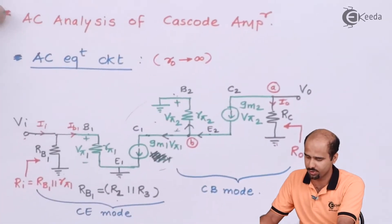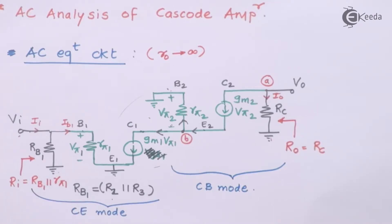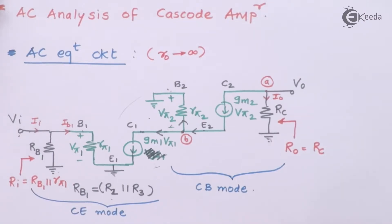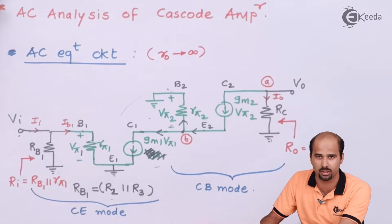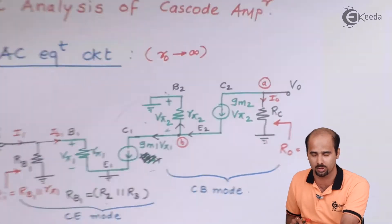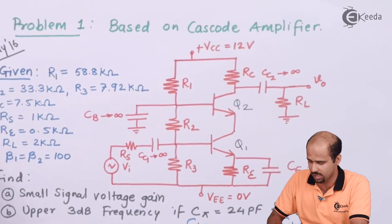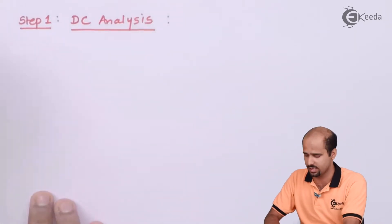First we draw the AC equivalent model of the cascode amplifier to find the voltage gain. But DC analysis is important first — we will calculate Gm1 and Gm2 and then find Rπ1, Rπ2, and so on for the small signal analysis.